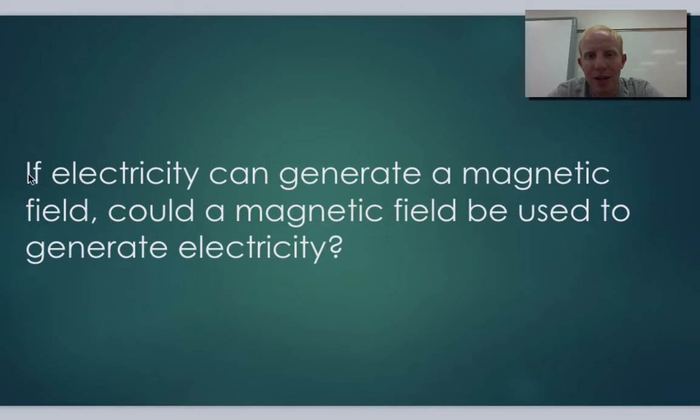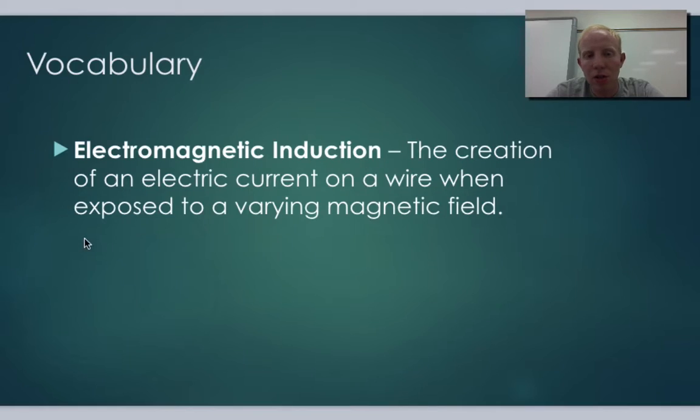And you bet. That's what electromagnetic induction is. It's the opposite of what we looked at last time. Electromagnetic induction is the creation of electric current on a wire when exposed to a varying magnetic field.